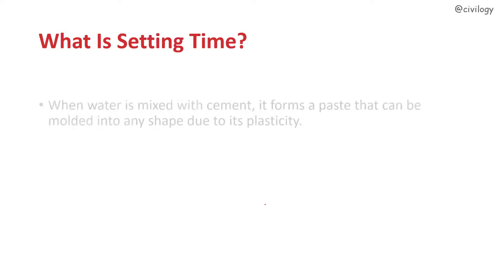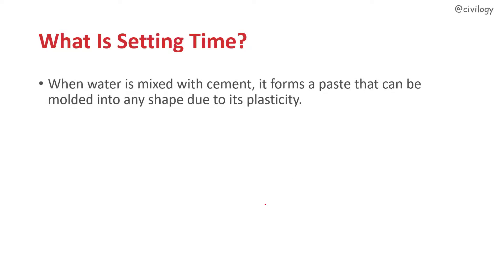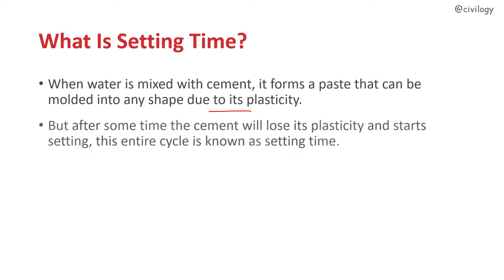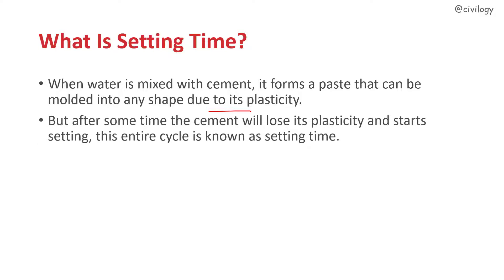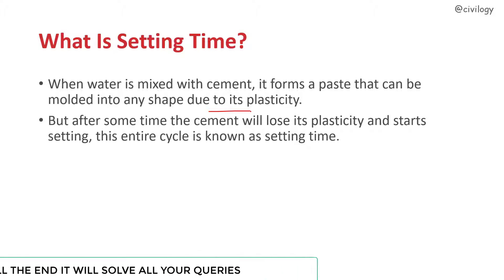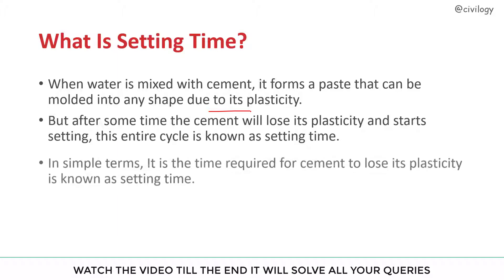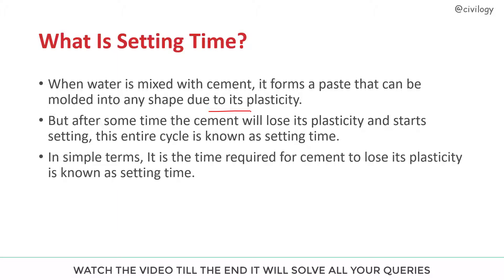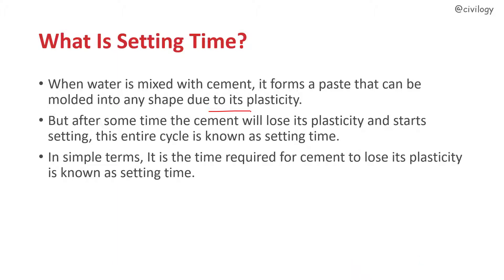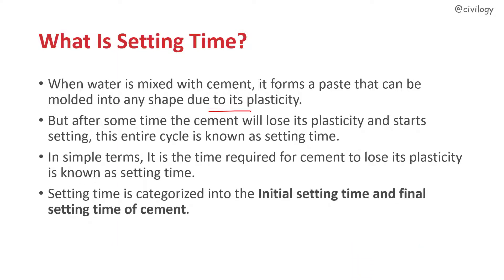What is setting time? When water is mixed with cement, it forms a paste that can be molded into any shape due to its plasticity. But after some time, the cement will lose its plasticity and starts setting. This entire cycle is known as setting time — it is the time required for cement to lose its plasticity. The setting time is categorized into initial setting time and final setting time of cement.